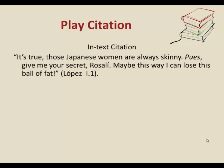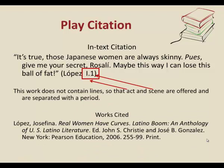Let's look at a play citation. I have some lines from a play. The MLA handbook guides you to offer Roman numerals for acts, and then for scenes a traditional Arabic number, followed by another period and number if you have lines. So with Shakespeare, for the most part, you're going to have a Roman numeral, dot, number, dot, and then another number — that last number would be the lines.